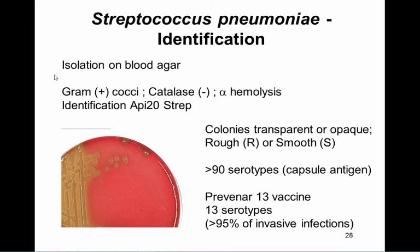Colony morphology can be transparent or opaque, apparently related to the amount of teichoic acid in the cell wall and linked to invasiveness. Colonies can also be rough or smooth — smooth colonies have a capsule antigen, rough colonies do not.